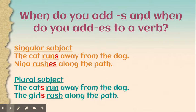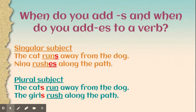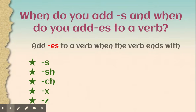When we have plural subjects and plural verbs, we have sentences like 'the cats run away from the dog.' We know that 'cats' is plural — more than one — so we need a plural verb: 'run.' Same thing with 'the girls rush along the path.' The subject 'girls' is plural, so we need the plural verb 'rush.' We don't add anything to the word 'rush.'